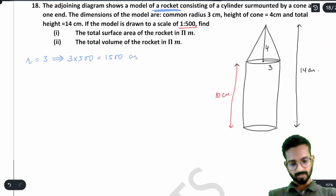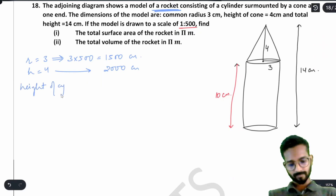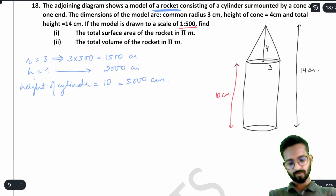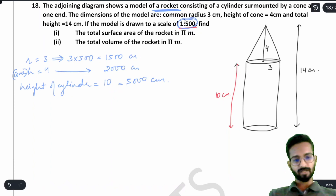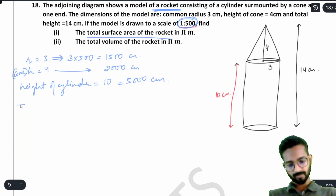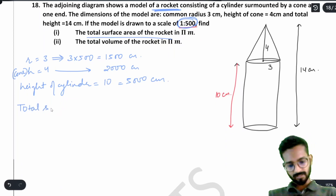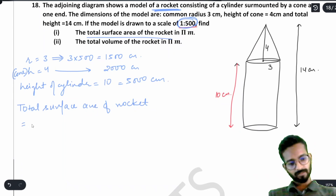Multiply all dimensions by 500: radius = 3 × 500 = 1500 cm, height of cone = 4 × 500 = 2000 cm, height of cylinder = 10 × 500 = 5000 cm. Find the total surface area of the rocket in terms of π — do not substitute a value for π.